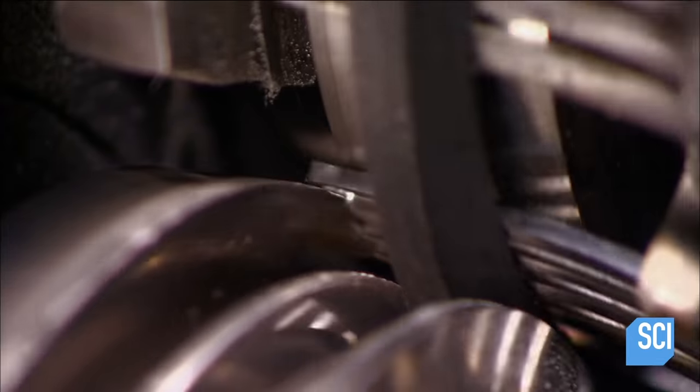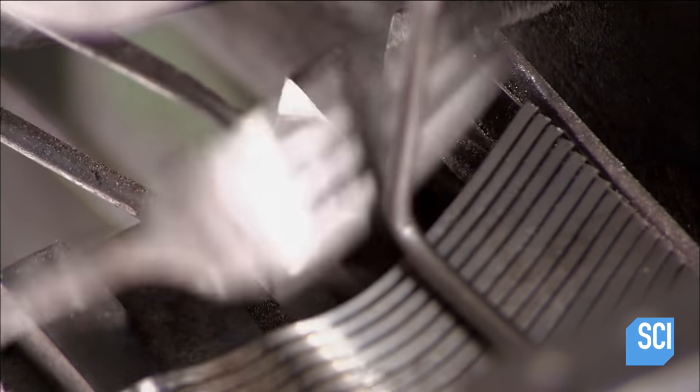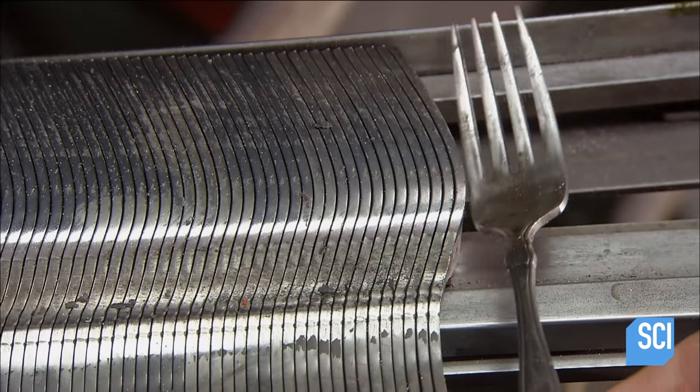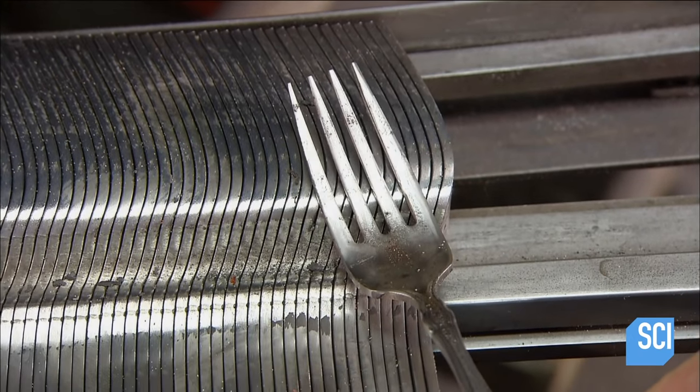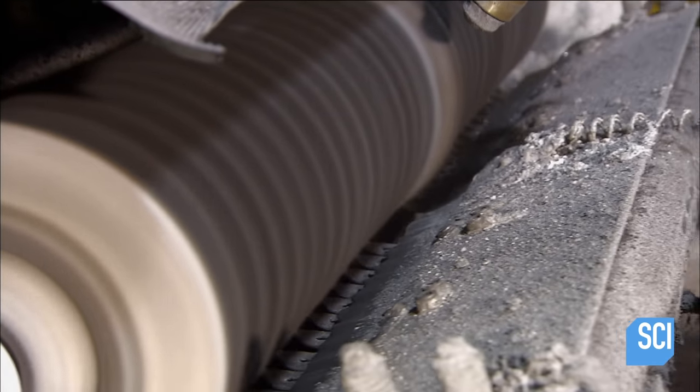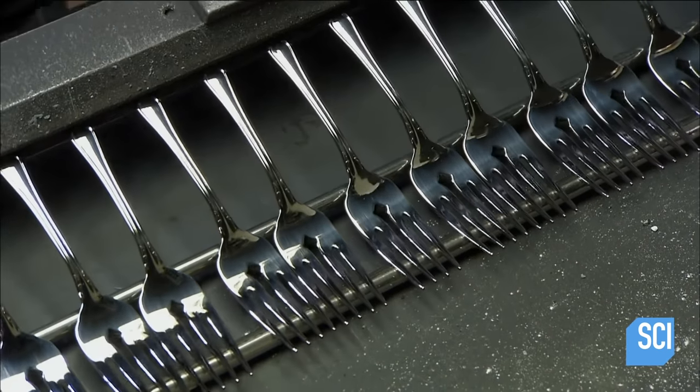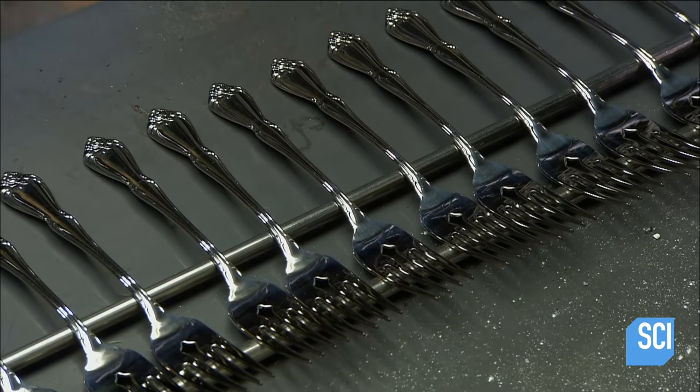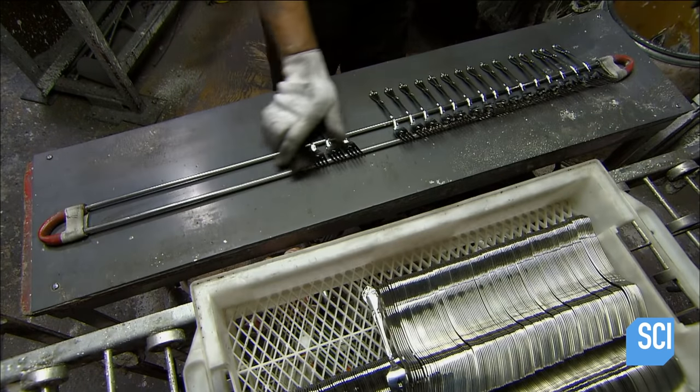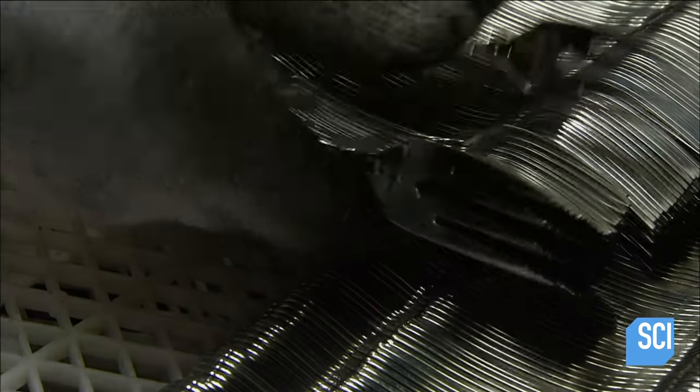The last stop for all the flatware is the buffing equipment. Cloth wheels polish the surface with a liquid buffing compound until the steel shines. The casual flatware are now ready for packaging.